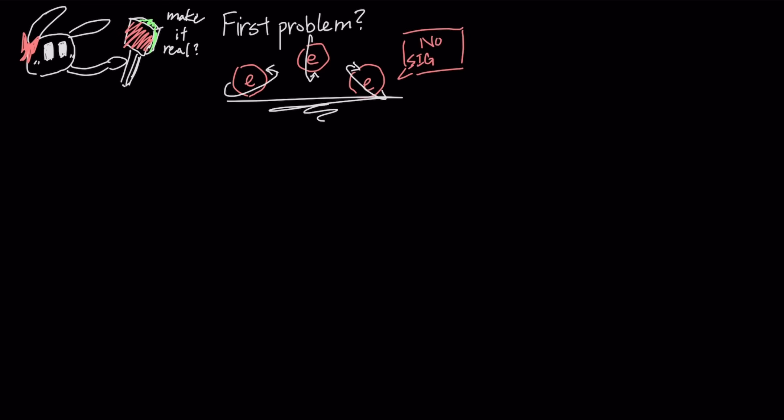To actually make this concept work in the real world, you first have to deal with the problem that electrons usually spin in every random direction, creating a mess that is useless for sending clear signals.